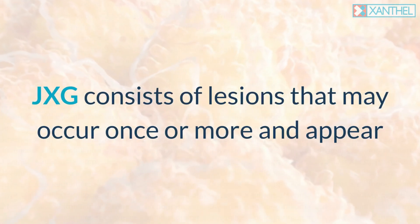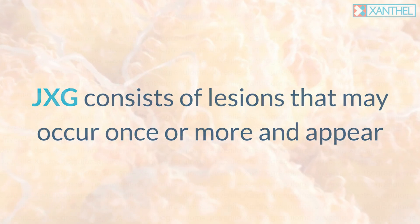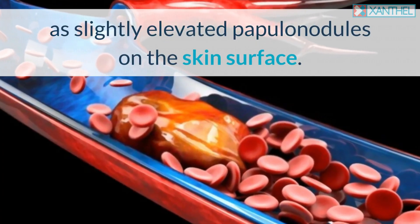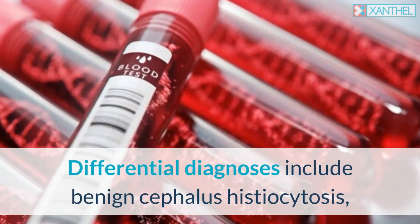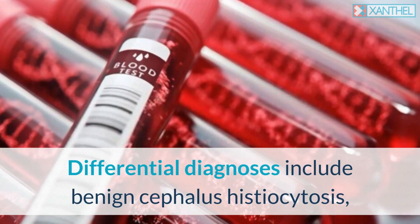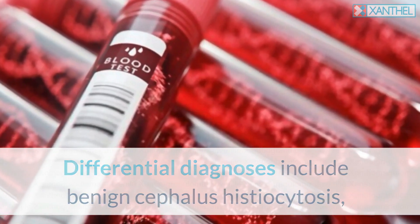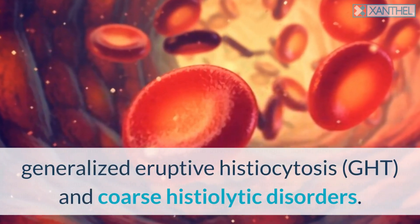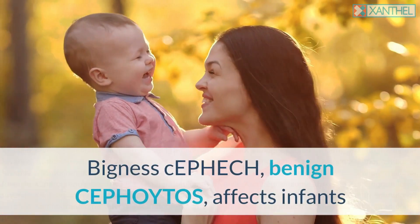JXG consists of lesions that may occur once or more and appear as slightly elevated papules or nodules on the skin surface. Differential diagnoses include benign cephalic histiocytosis, generalized eruptive histiocytosis (GEH), and coarse histiocytic disorders.